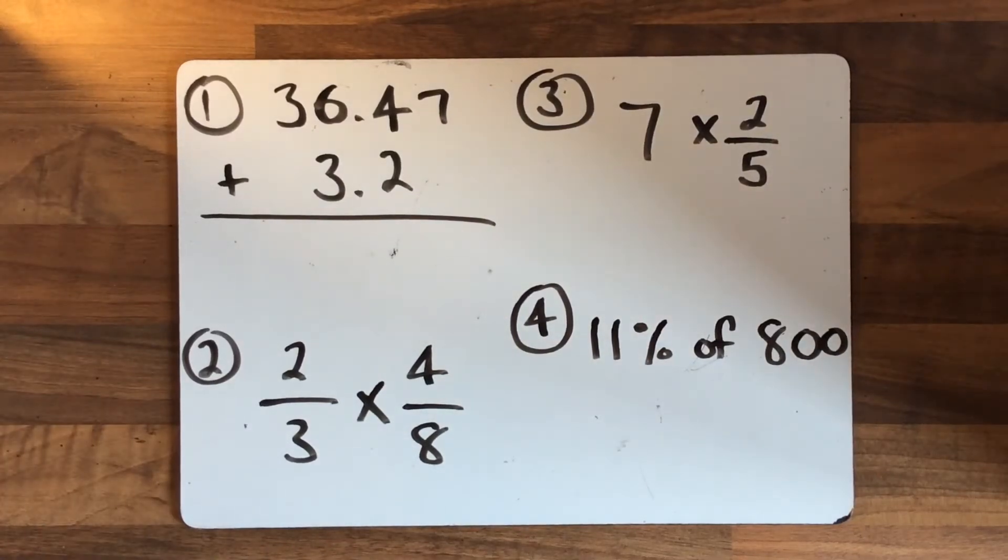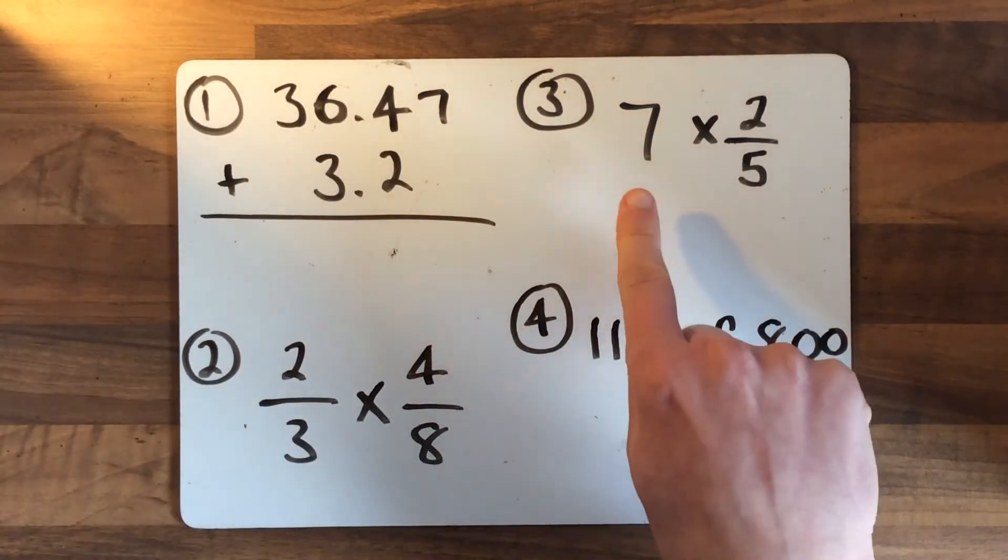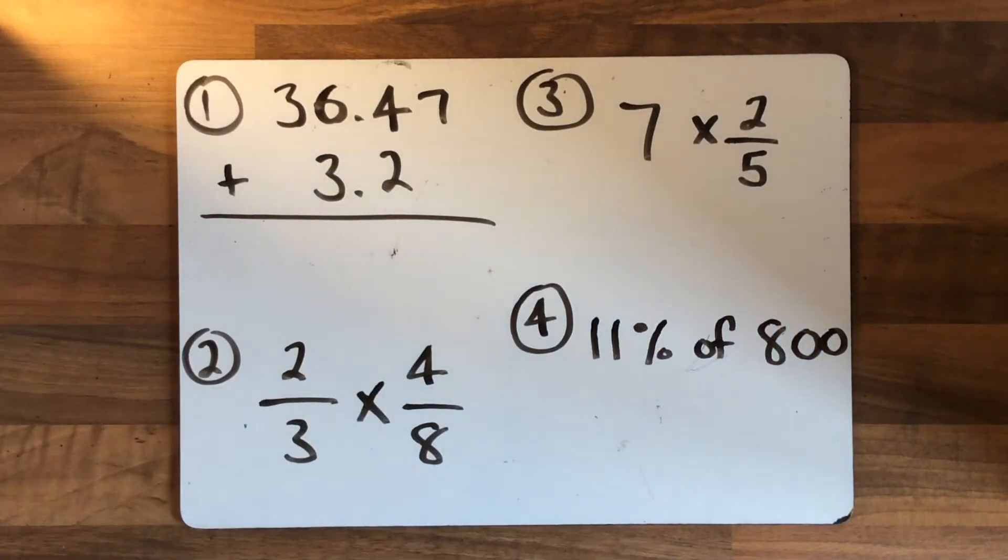Good morning Year 6, it's time for your maths starter today. You've got four questions here. Number one is an addition question with decimals - I've already lined up the decimals for you. Number two is a multiplication of a fraction by a fraction. Number three is a multiplication of an integer or a whole number by a fraction. And number four is to find 11% of 800. You might want to pause the video here, have a go at solving these four, and then unpause to see if you got the questions correct.